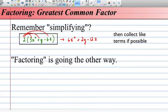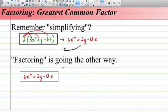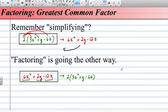Now factoring is actually going the other way. So we'll start out with 6x squared plus 2y minus 12z, and we're left with 2 bracket 3x squared plus y minus 6z.